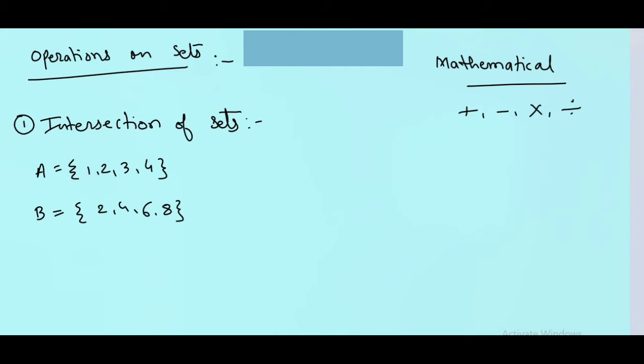Now, the intersection means we will write it in this way: A intersection B. And this is also a set. In this set, we have the elements which are common in these two sets. For example, we have 2 and 4 common.